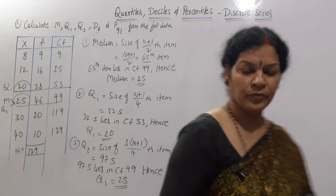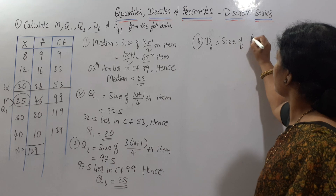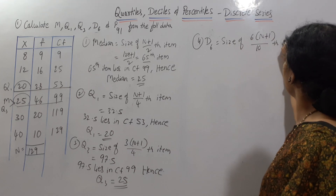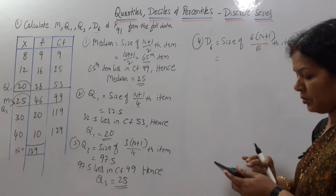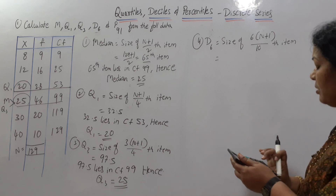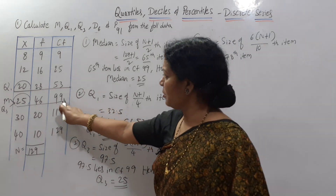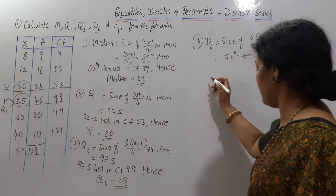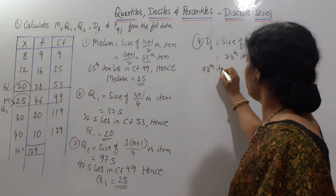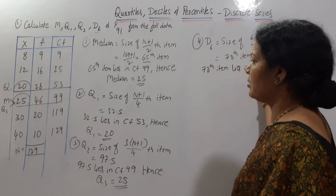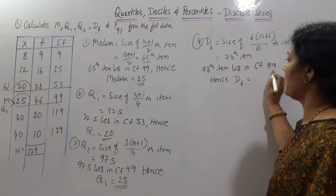Next, D6. The formula for D6 is: size of 6(N+1)/10 th item. So 6×130/10 = 78th item. The 78th item lies in CF 99, so D6 = 25. Notice that median, Q3, and D6 all equal 25.